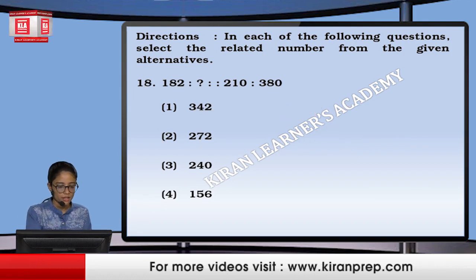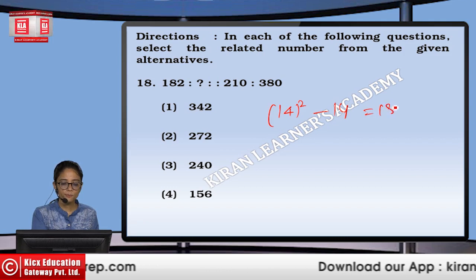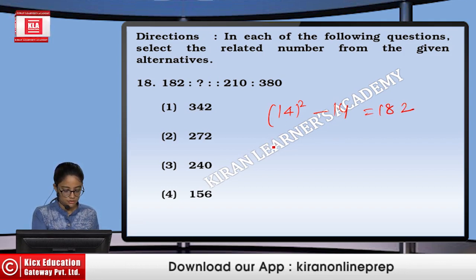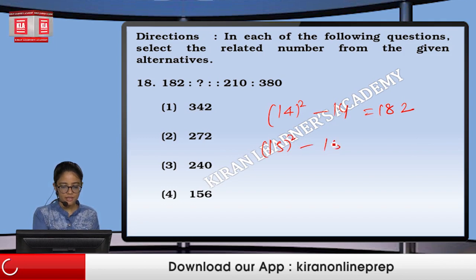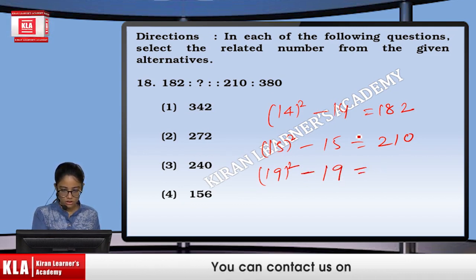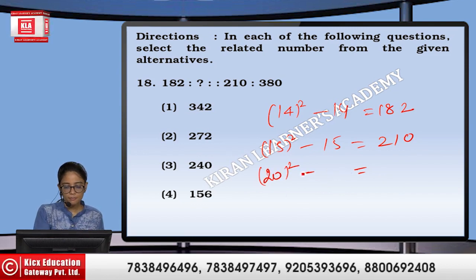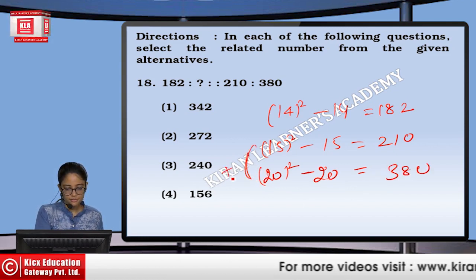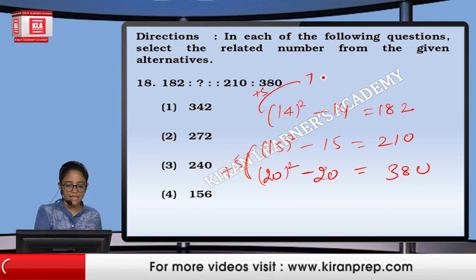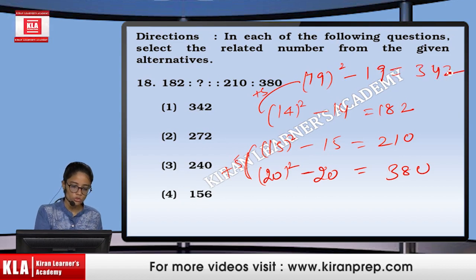Next, 182. If we say that 14 cubed minus 14 gives you 182. Similarly, 15 cubed minus 15 gives us 3,360, and 19 cubed minus 19 gives us a larger value. There is a difference of 5 between terms. So, if I continue with plus 5, 19 cubed minus 19 gives us 342. So the answer is option 2.